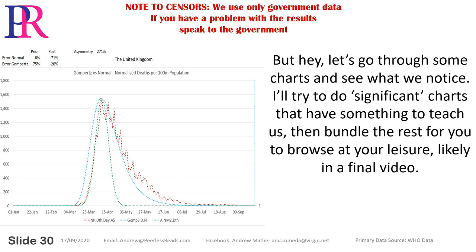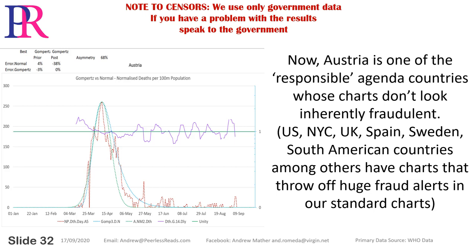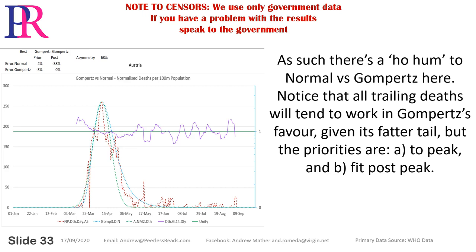Let's go through some charts and see what we notice. I'll try to do significant charts that have something to teach us, then bundle the rest for you to browse at your leisure, likely in a final video. Starting with Austria — that purple line is the growth factor, today's deaths over yesterday's deaths, which we expect to decline in a straight line through the contagion. Austria is one of the responsible agenda countries whose charts don't look inherently fraudulent, unlike US, New York City, UK, Spain, Sweden, and South American countries among others that have charts throwing off huge fraud alerts. Notice that all trailing deaths will tend to work in Gompertz's favour given its fatter tail.